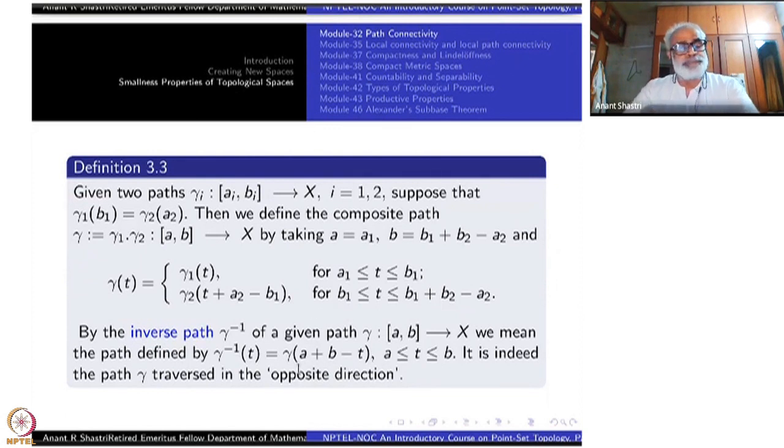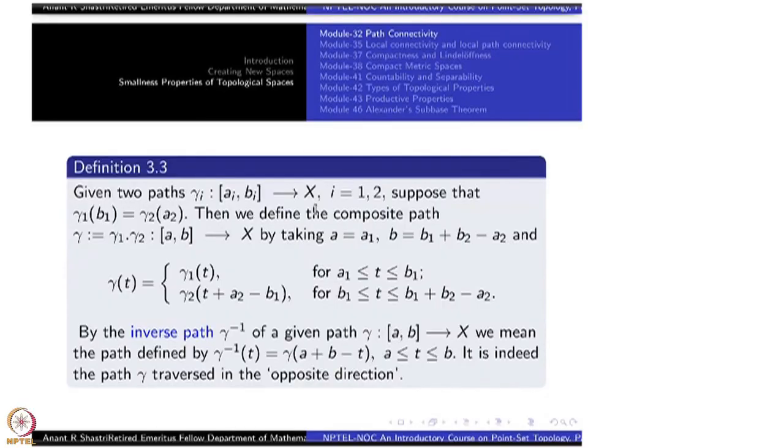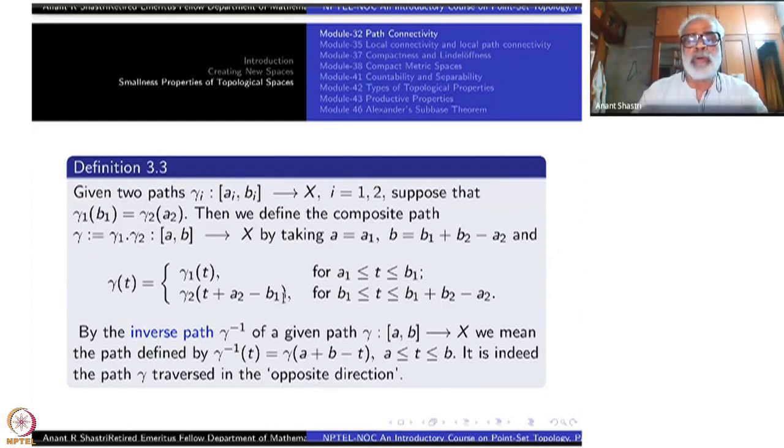These definitions are borrowed from what happens when you do integration on paths. Unfortunately, on arbitrary paths, you can't do any integration. You have to have differentiable paths or piecewise differentiable paths. But we don't need that in topology. We don't know what the meaning of differentiable function taking values in an arbitrary topological space. Even in a metric space, you won't know what to do with that. We have come far away from the Euclidean-ness of these topological spaces. But the idea is borrowed from there.